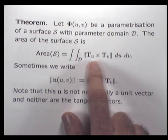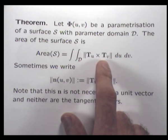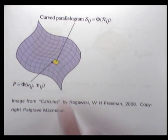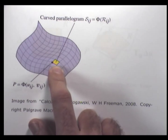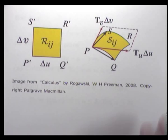You know this cross product, and the magnitude of this cross product — it looks like the area of a parallelogram. Let's zoom in on this yellow bit.